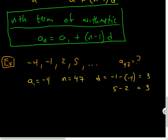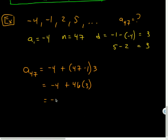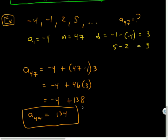So now that I know all of this, I can just plug in what I know and solve for what I don't. So a sub 47 is going to equal negative four plus 47 minus one times three. So that's negative four plus 46 times three. And what is 46 times three? That's 18 plus 120, 138. So it looks like 134 would be our answer.